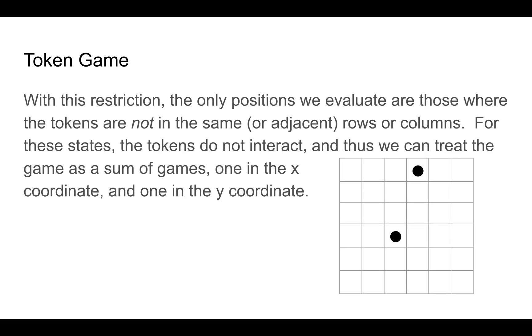With this restriction, the only positions we need to evaluate are where the tokens are not in the same row or the same column, because we already know how to evaluate positions where they are. In these states, the tokens don't interact. And we can move each token arbitrarily close to the x-axis or the y-axis, ignoring the other token. This lets us evaluate the game as a sum of games, because now the x and y coordinates are independent.